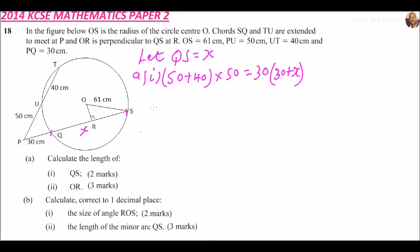So you will be able to get this equals to, use your calculator, that is 90 multiplied by 50, that will give you 4500. And this equals to, you open the bracket there, you get 900.